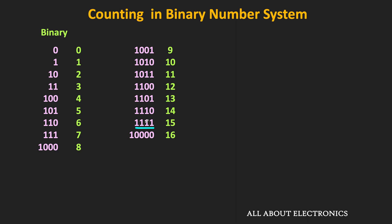But the question is: suppose we do not have this correlation table, and we want to convert some binary number into the decimal equivalent — how can we do it? That is exactly what we are going to learn next: if we have any binary number, how can we convert it into the decimal equivalent?